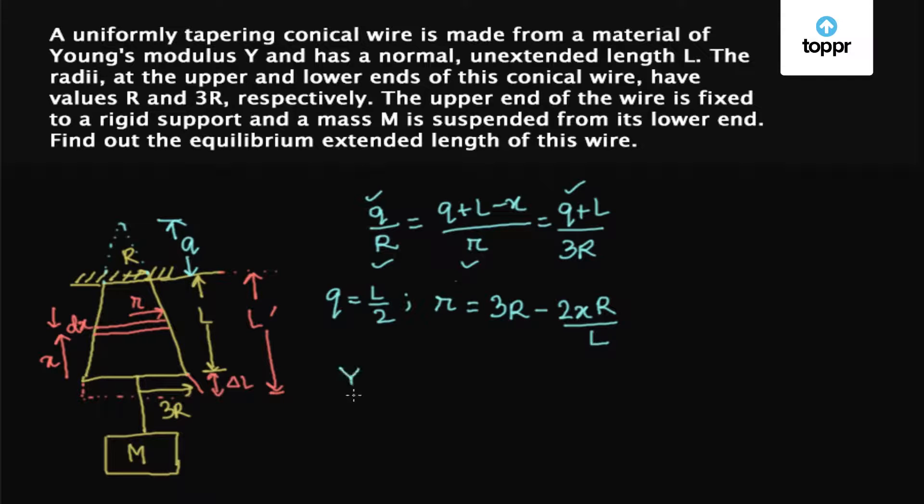Now we know that the Young's modulus Y equals F L upon A into delta L, where L is the initial length.